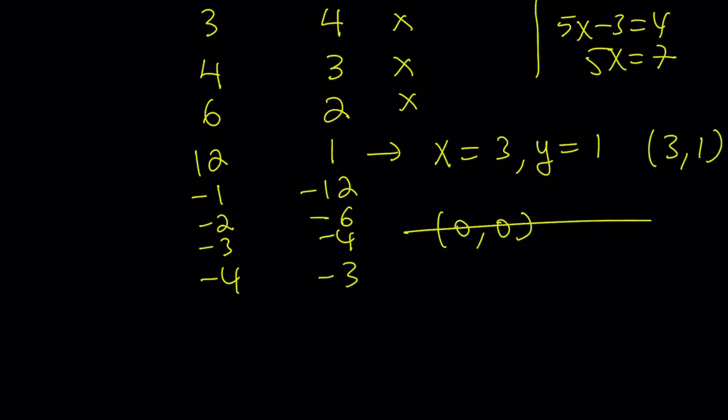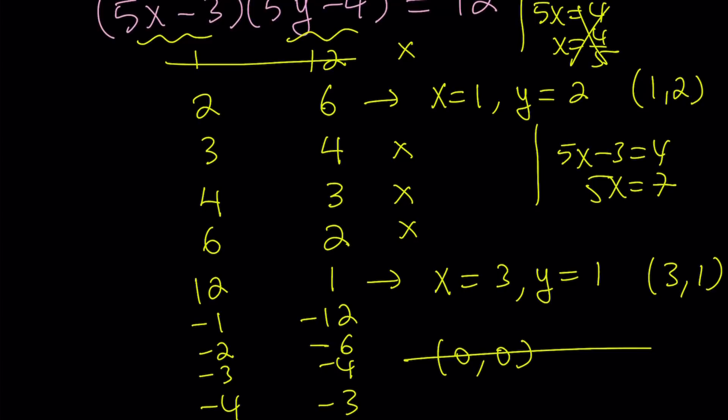Negative 4 and negative 3. Let's test those values out. If 5x minus 3 is negative 4, 5x equals negative 1. That's no good. What about negative 6 and negative 2? That means 5x is equal to negative 3. That's no good. What about negative 12 and negative 1? That means 5x is equal to negative 9. That's not good either. So, we don't have any other integer solutions. The only ones are 1, 2 and 3, 1.